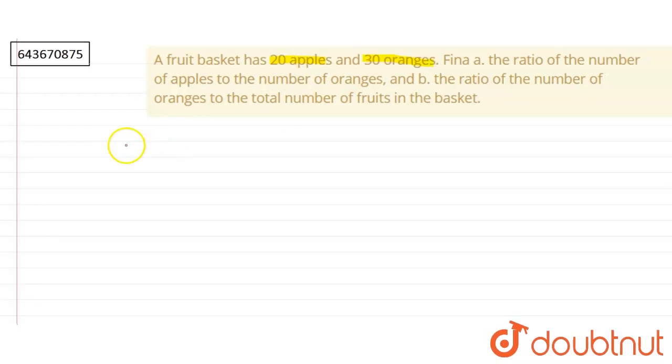Let's start with the first one. In the first one, we have to find the ratio of the number of apples to the number of oranges.